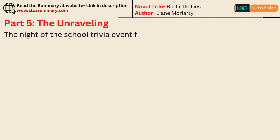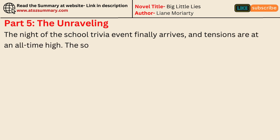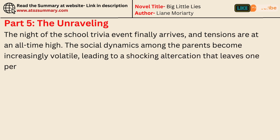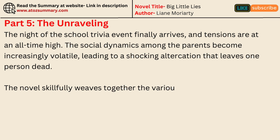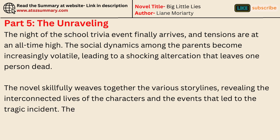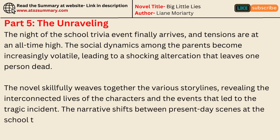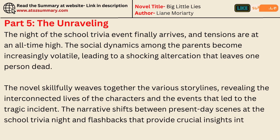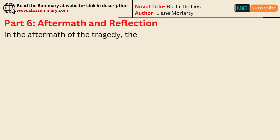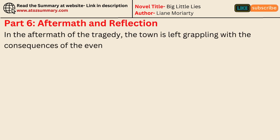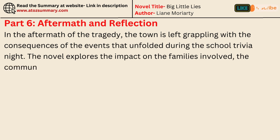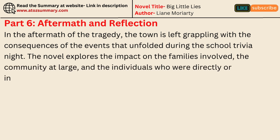The night of the school trivia event finally arrives, and tensions are at an all-time high. The social dynamics among the parents become increasingly volatile, leading to a shocking altercation that leaves one person dead. The novel skillfully weaves together the various storylines, revealing the interconnected lives of the characters and the events that led to the tragic incident. The narrative shifts between present-day scenes at the school trivia night and flashbacks that provide crucial insights into each character's motivations and choices. In the aftermath of the tragedy, the town is left grappling with the consequences, and the novel explores the impact on the families involved, the community at large, and the individuals who were directly or indirectly affected.